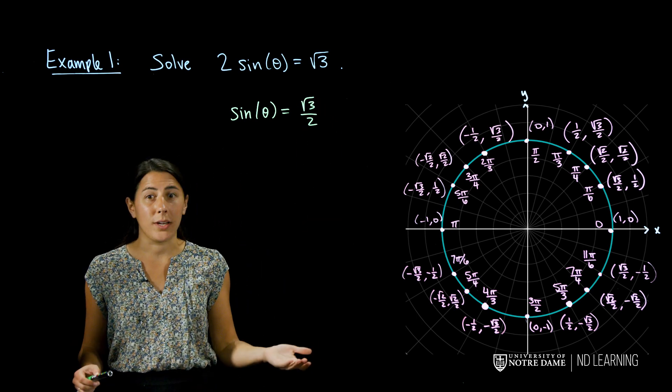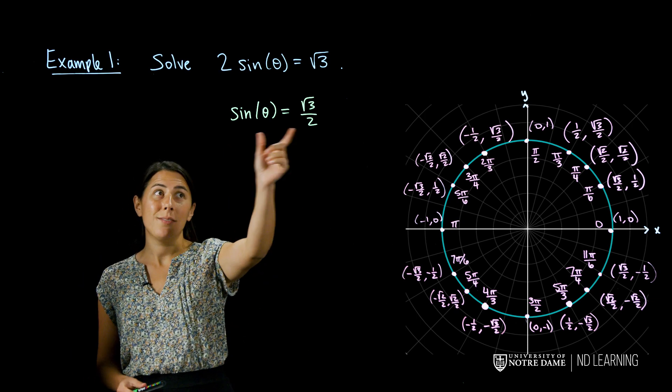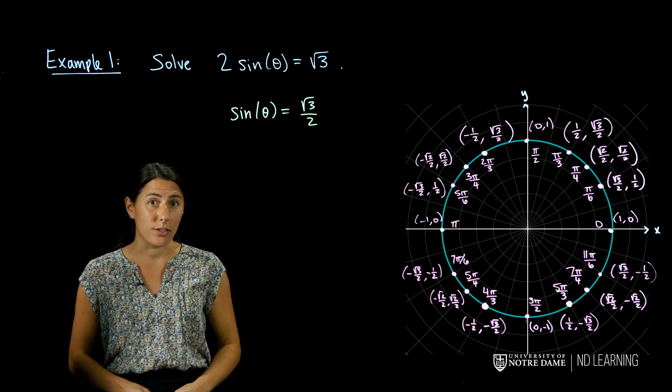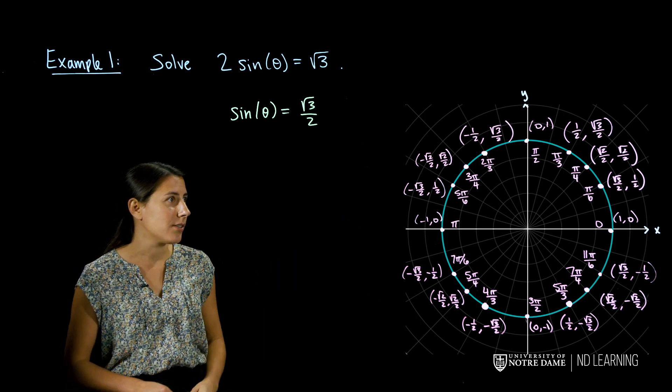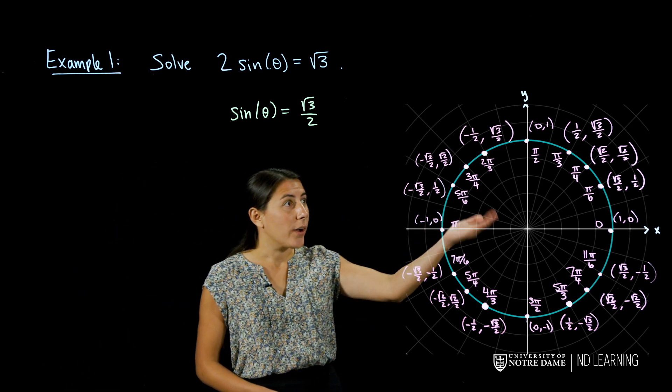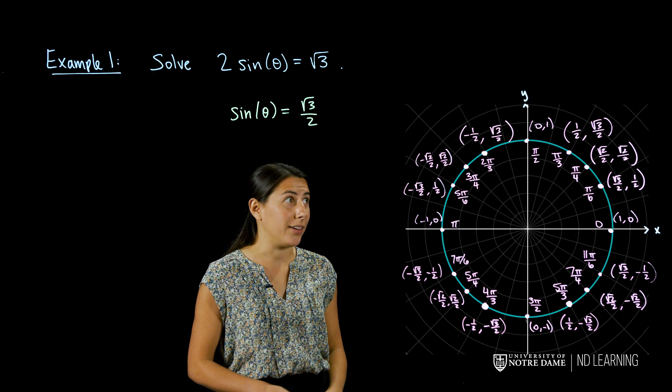So now our question becomes which angles have sine value of square root of 3 over 2. Looking at our unit circle, that's asking which y values have value root 3 over 2.